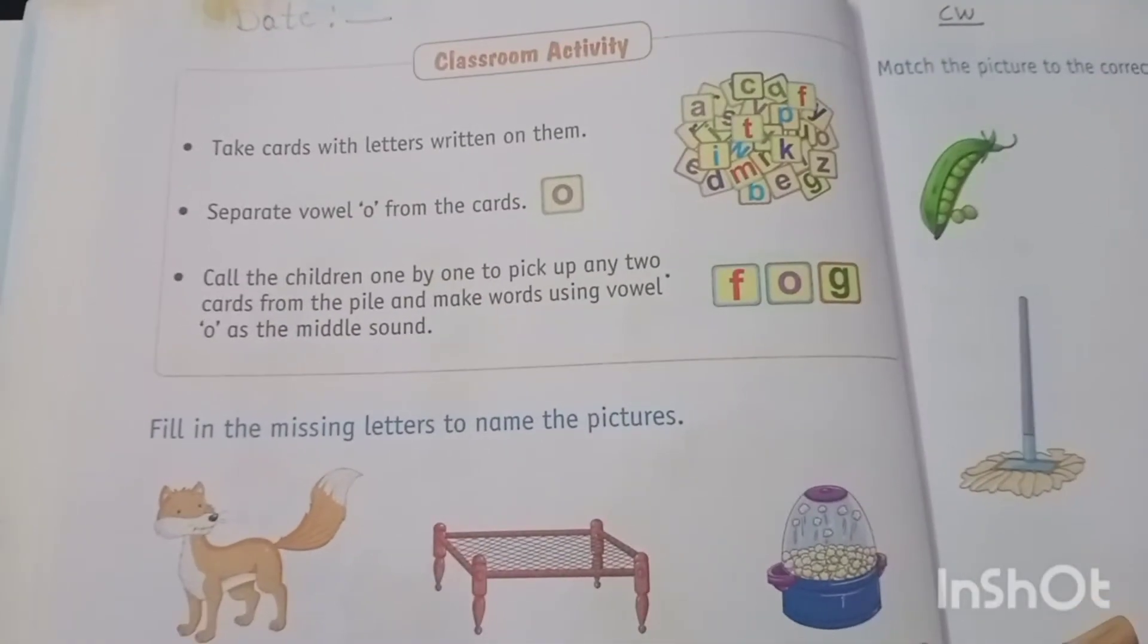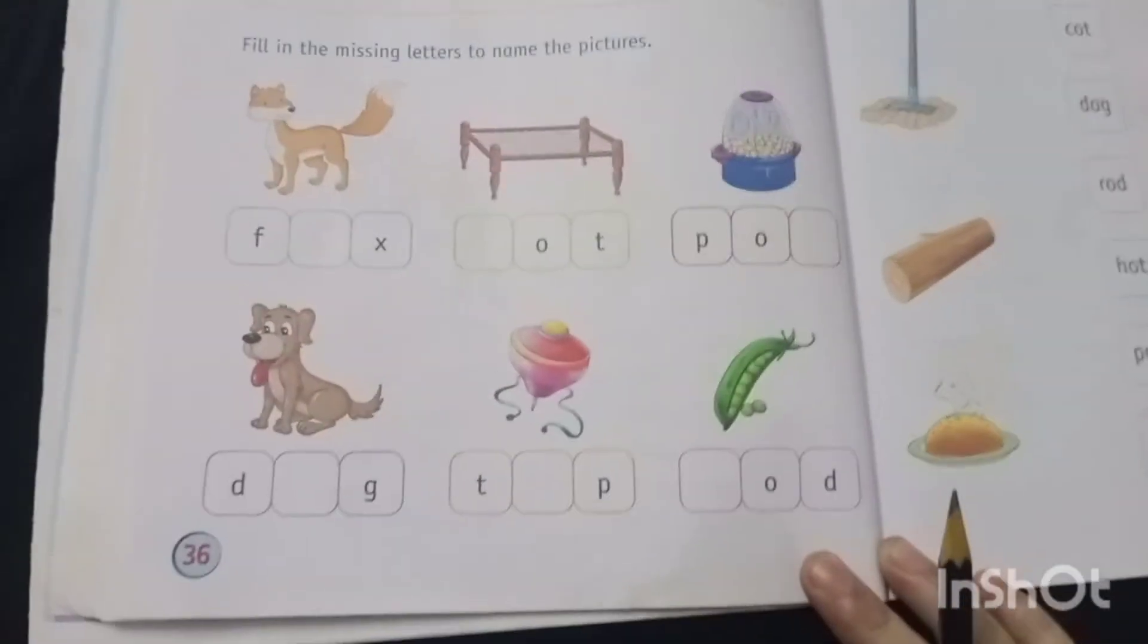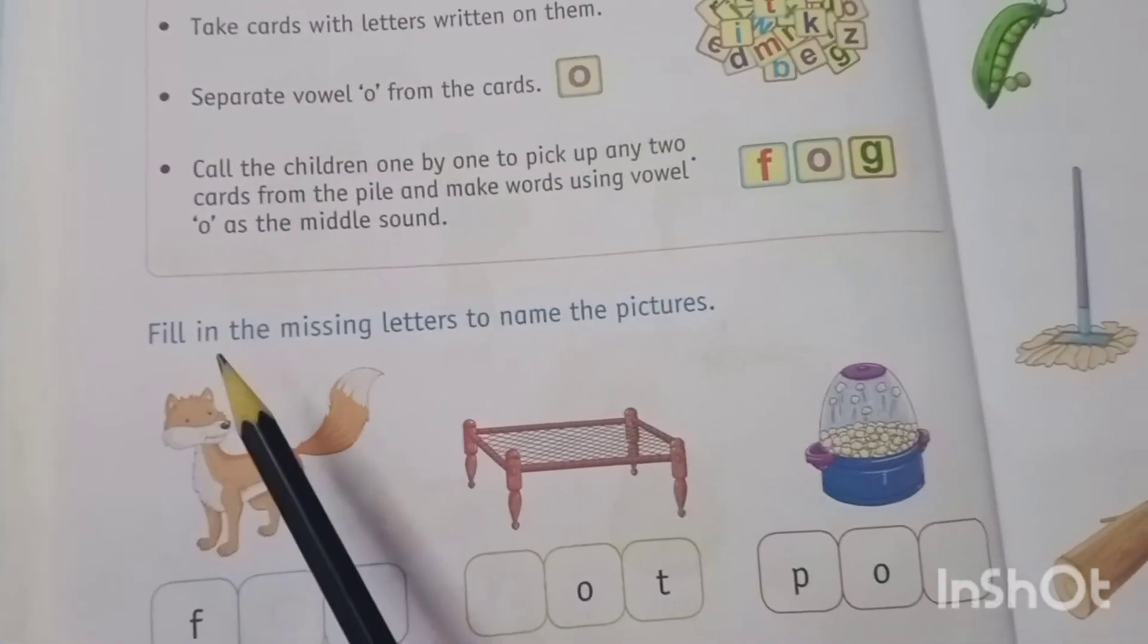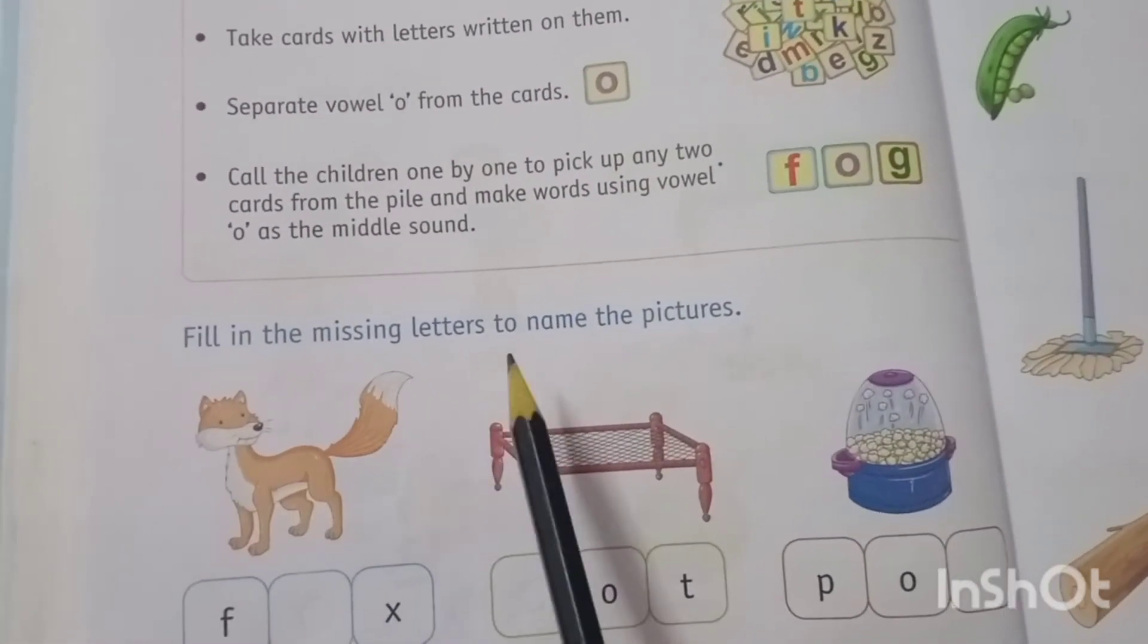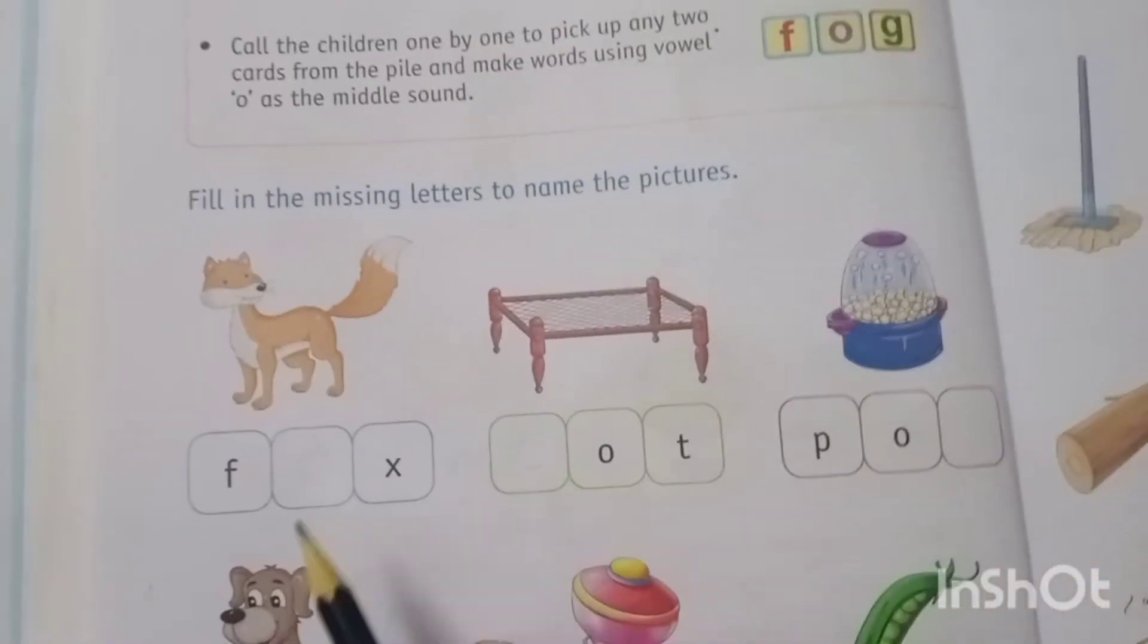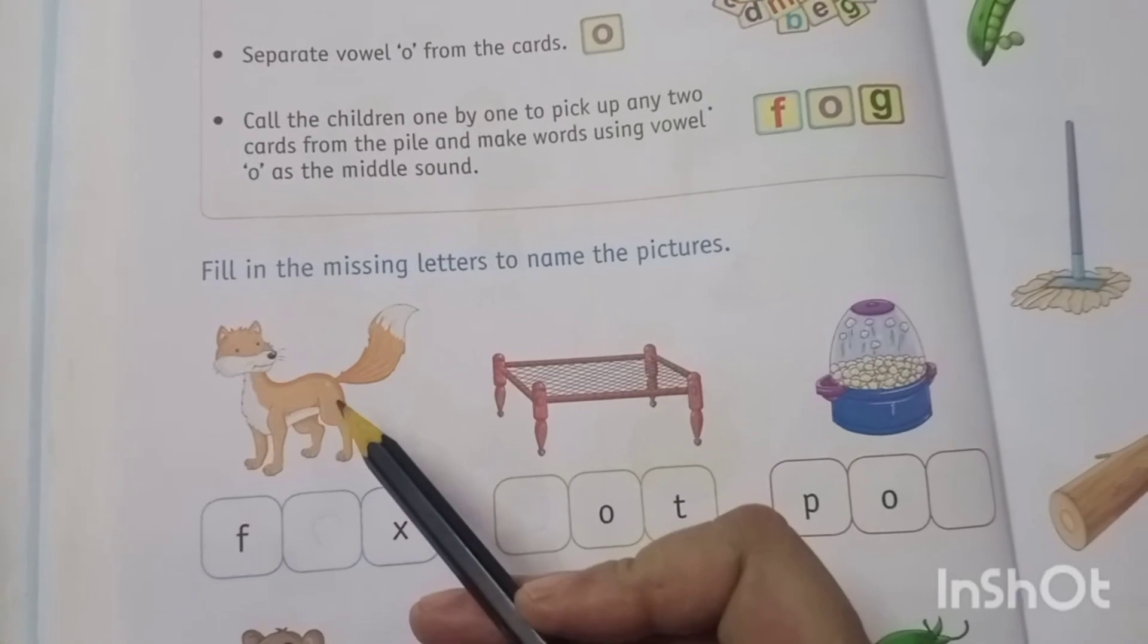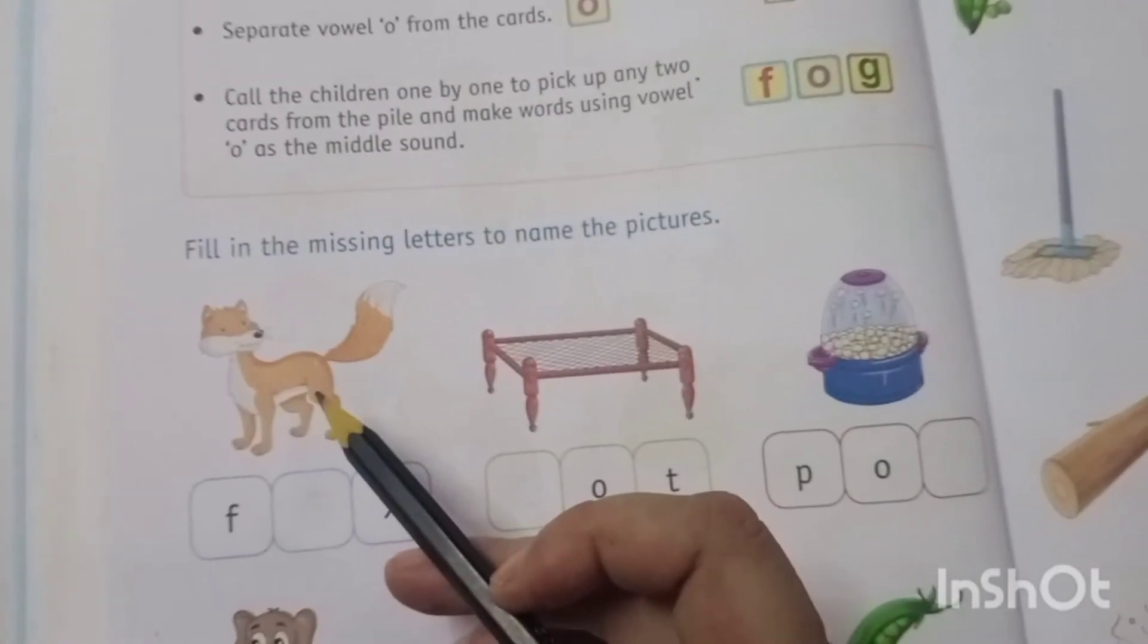Now students, open your English book page number 36. Write down the date first. Question number 1: Fill the missing letters to name the pictures. You have to fill the missing letters. Now see, which picture is this? Yes, this is the picture of a fox.